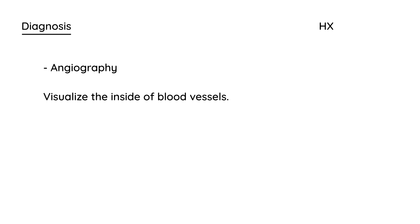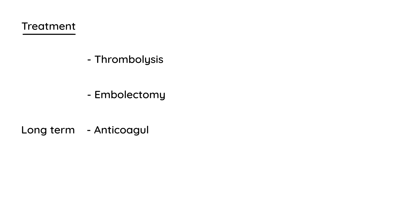Mesenteric ischemia is a difficult diagnosis. However, angiography — a medical imaging technique used to visualize the inside of blood vessels and their lumen — can clearly show any thrombus or embolus and is the procedure of choice. Treatment involves thrombolysis to break up the blood clot. If there is an embolus, a surgical embolectomy is performed. Long term, the patient needs anticoagulation to prevent further blood clots, thrombi, or emboli.